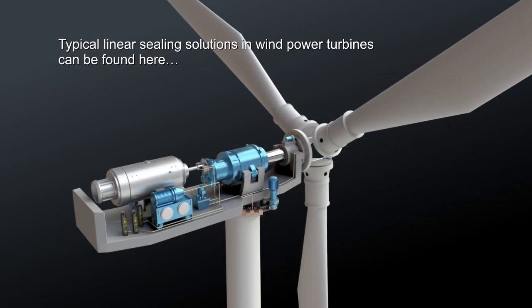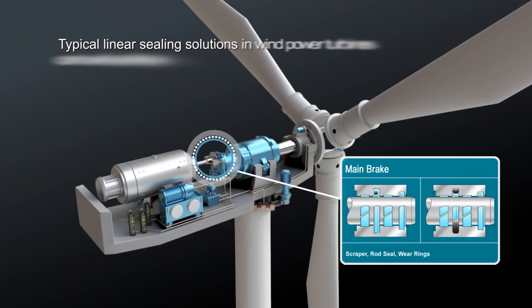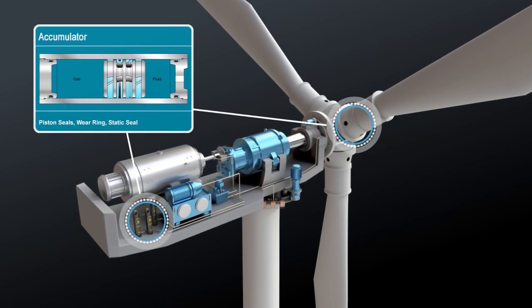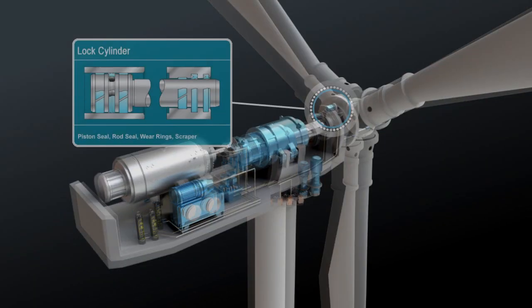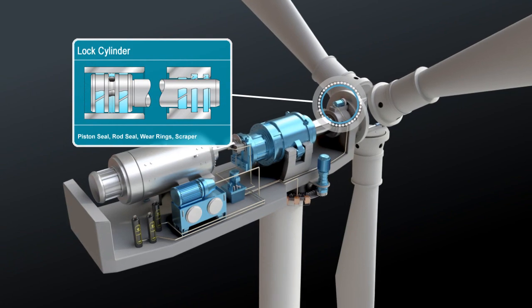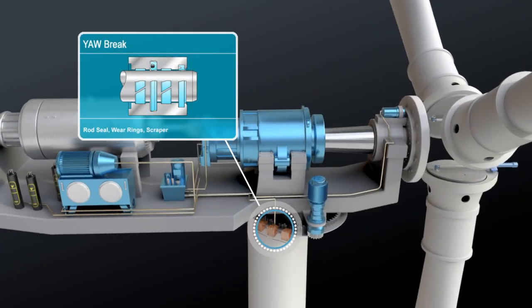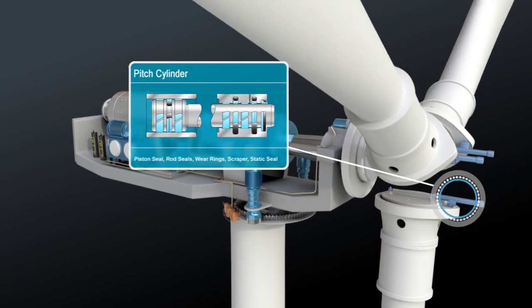Typical solutions for wind power include the turbine's main brake, its accumulator, lock cylinder, yaw brake, and pitch cylinder.